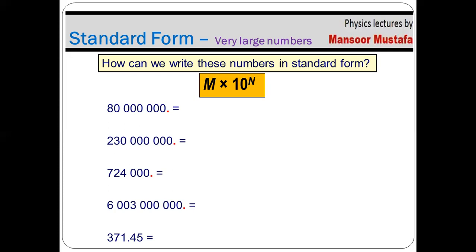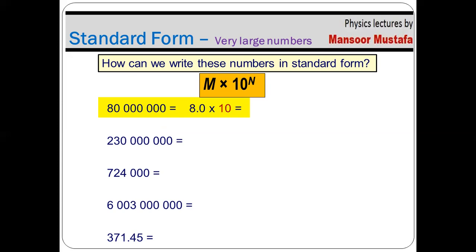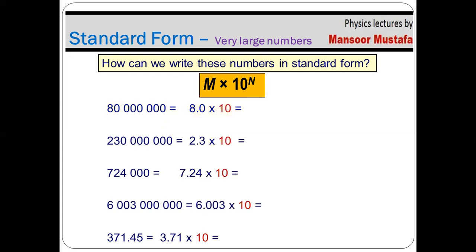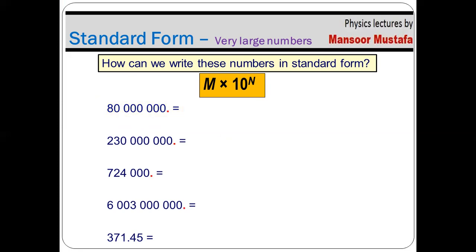The first non-zero digit in the first example is 8, so we move the decimal from its original position to after 8. If we put the decimal after 8, the number will look like this. After this step, we multiply it by 10. Performing the same procedure for the rest of the numbers, they will look like this. To summarize: first identify the position of the decimal, then put the decimal after the first non-zero value, then multiply by 10.